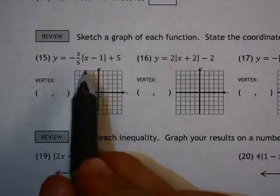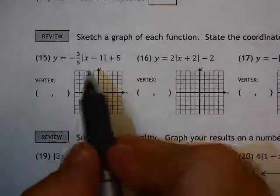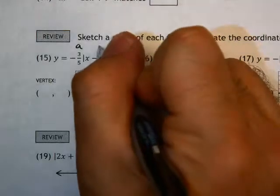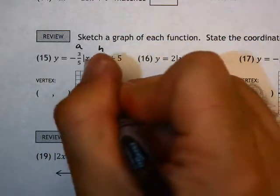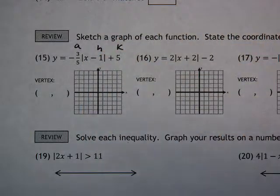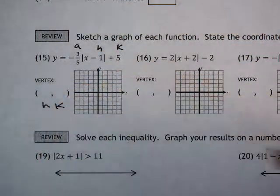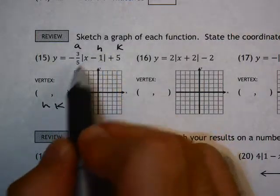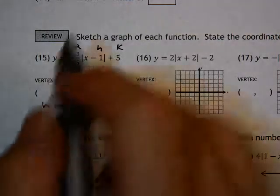For number 15, for the vertex first, remember that this number in front is the A value. The number inside with X is the H value, and the number outside is the K value. The vertex comes from H and K. Remember, for the H value, whatever's inside here changes signs—it becomes the opposite.